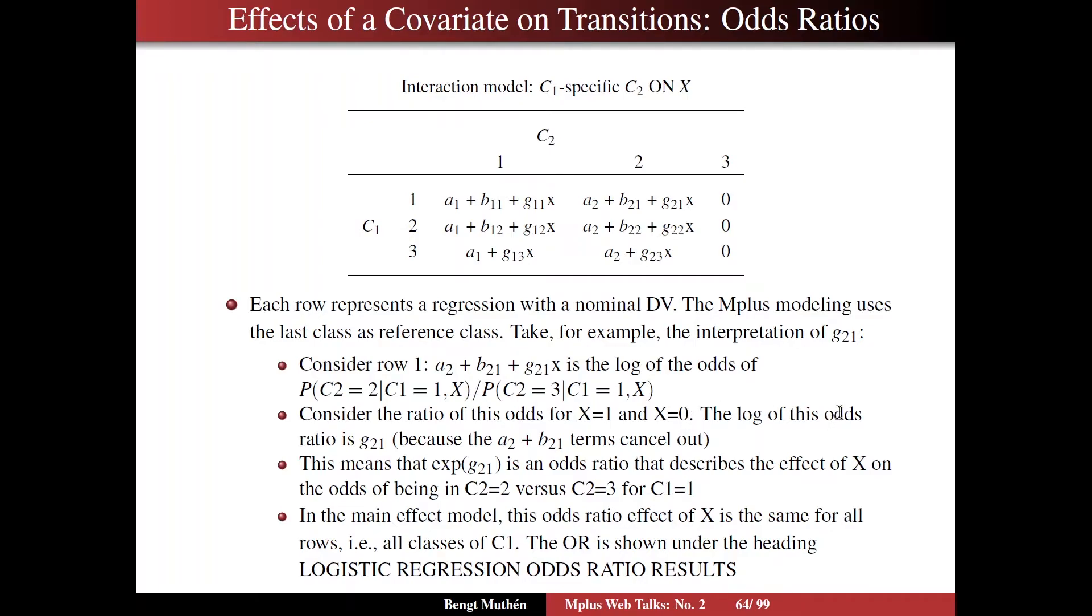The log of this odds ratio is g21. Because when you compare X equals 1 with X equals 0, the a2 plus b21 terms cancel out. That is, when X equals 0, this term doesn't exist, you have a2b21, and ratio of odds, the log of a ratio is the log of 1 divided by the log of the other, so the a2 plus b21 term cancels out. That's a lot of technical stuff. But that means that exponent of g21 is an odds ratio that describes the effect of X on the odds of being in C2 equals 2 versus C2 equals 3 for C1 equals 1.